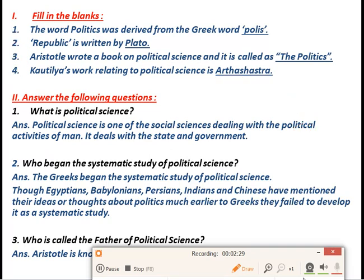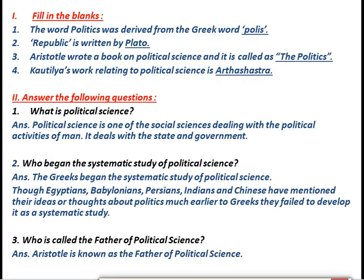The first question answer is: what is political science? Political science is one of the branches of social science. In social science we read about history, civics, and geography, and we also read about political science. In political science we read about the political activities of man, and about the state and the government — what activities are going on in the state, the government, and among humans. It deals with the political activities of man as well as the state and the government.